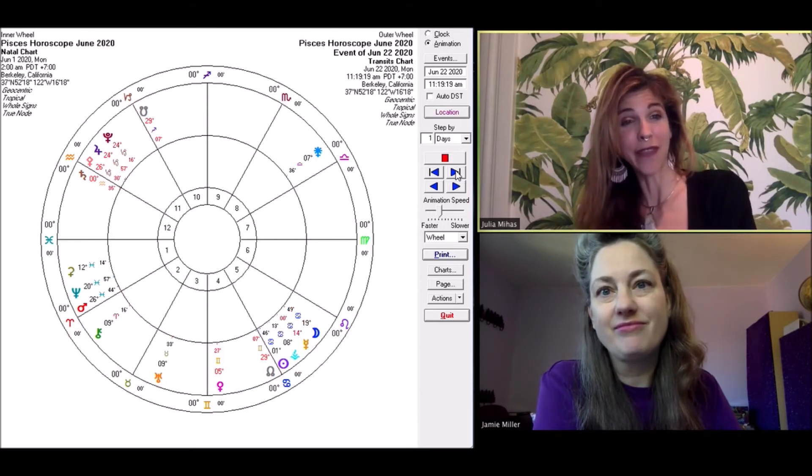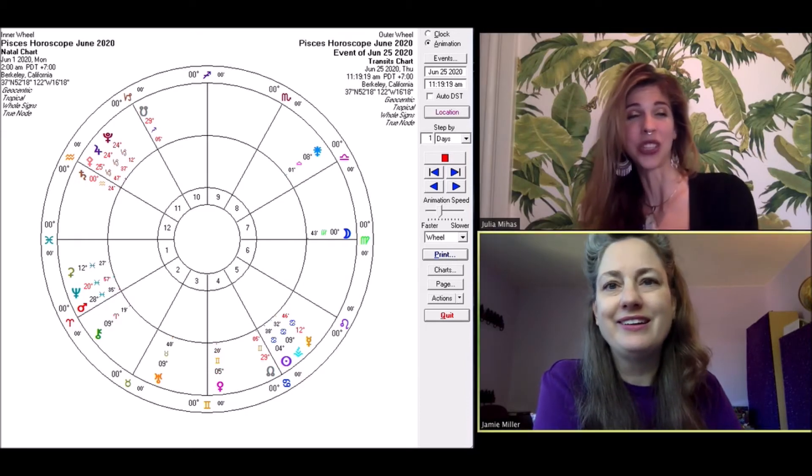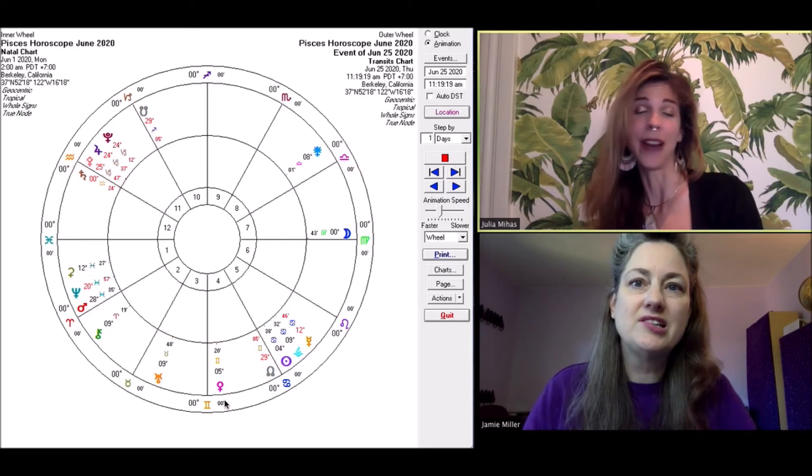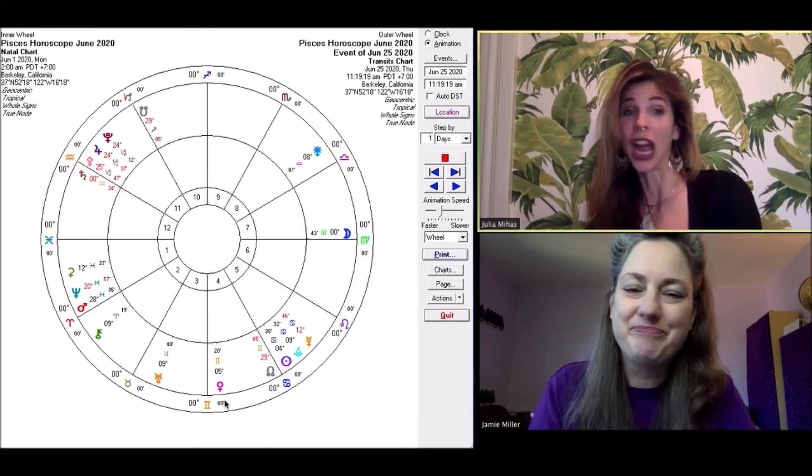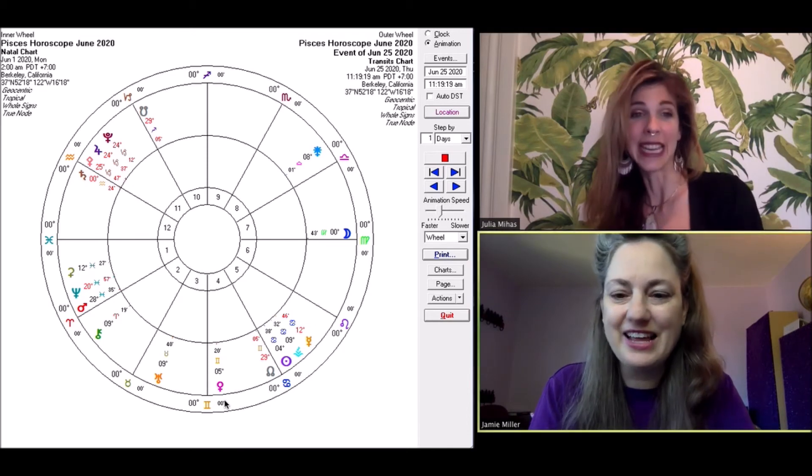Then, June 25th, Venus finally goes direct, which is going to feel great because, you know, the relationship asteroid has already gone direct earlier. So the end of... This signals the end of a giant relationship retrospection period we've all been going through. So that's going to ease up.